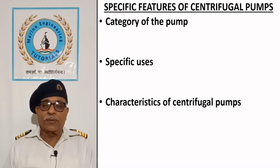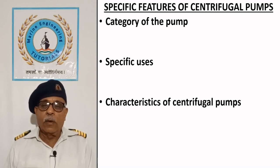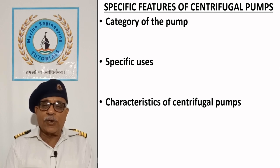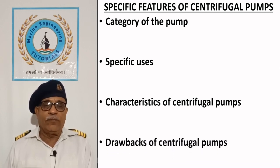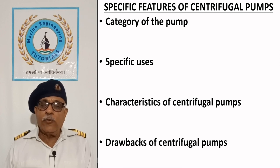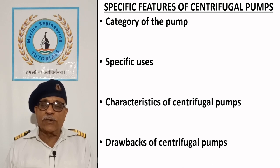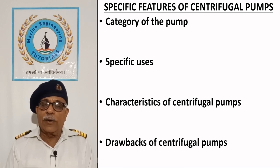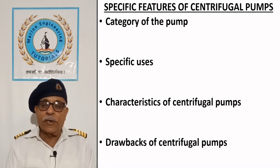Characteristics of centrifugal pumps: centrifugal pumps provide constant flow rate and discharge pressure with respect to time. Drawbacks: centrifugal pumps are unable to handle vapors. They may be equipped with a priming arrangement to remove air or vapors from the suction side when expected to draw liquids from a level below the pump, especially when the liquid is volatile in nature with high vapor pressure. This problem can be eliminated if the pump is submerged in the liquid.